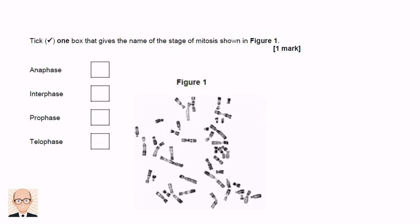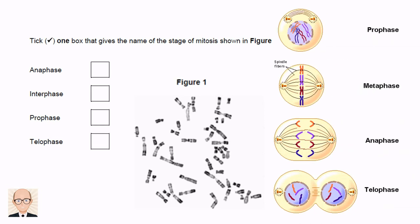This next part asks us which stage of mitosis is shown in figure one. If we have a look at the stages as described in textbooks we can clearly see that prophase is the correct answer. The chromosomes have condensed but are not aligned or beginning to separate. You should remember the order of the stages of mitosis as well as a summary of what happens at each stage.